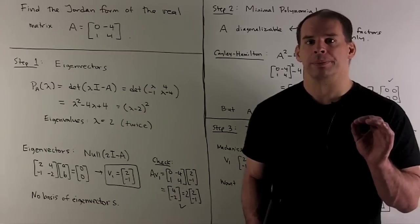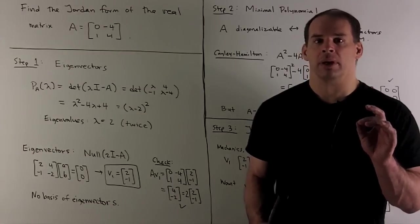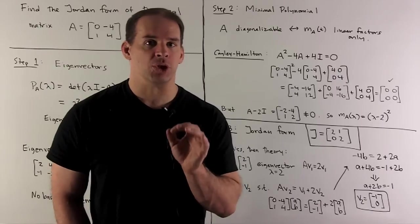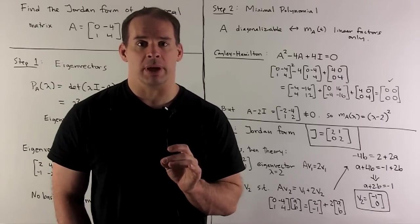So, what do we do? We look at Jordan form. But before we go there, let's take a closer look at our matrix. Before we find the Jordan form, let's first look for the minimal polynomial.